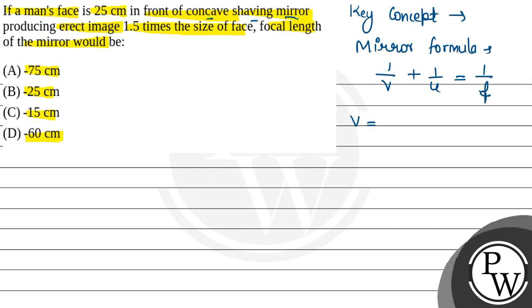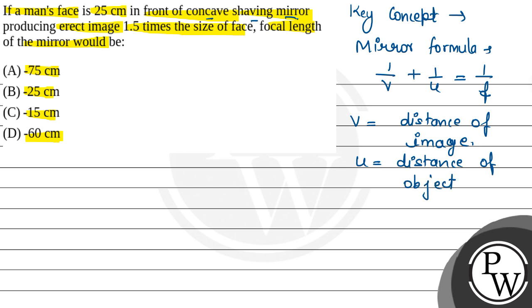Where V is the distance of the image, and U is the distance of the object. We will also use the magnification formula for the concave mirror. What is the formula of magnification? That is equal to minus V divided by U, where V is the distance of image and U is the distance of object.